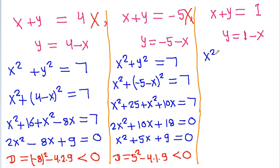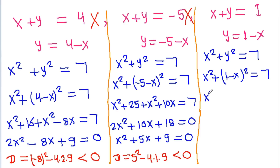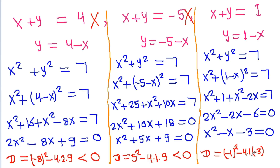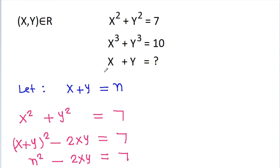Checking n equals 1: y equals 1 minus x, substituting into x squared plus y squared equals 7 gives x squared plus (1 minus x) squared equals 7, which simplifies to 2x squared minus 2x minus 6 equals 0, or x squared minus x minus 3 equals 0. The discriminant d equals 1 plus 12 equals 13, which is greater than 0. So we can get real values of x, meaning x plus y equals 1 is possible. Therefore, the value of x plus y is 1.